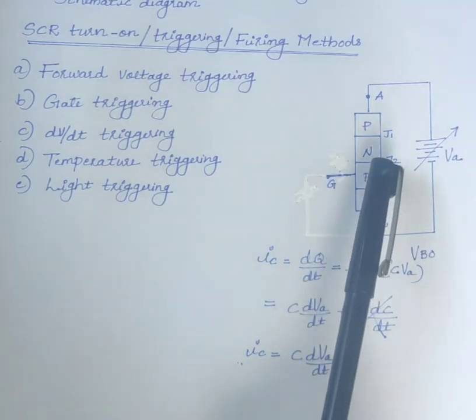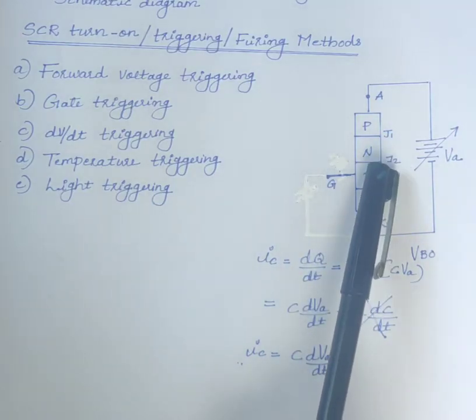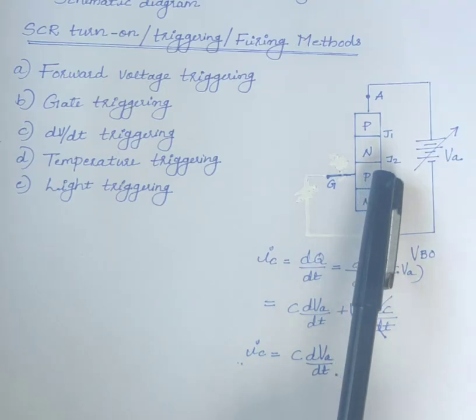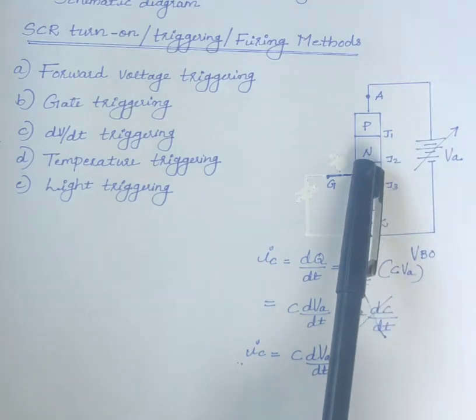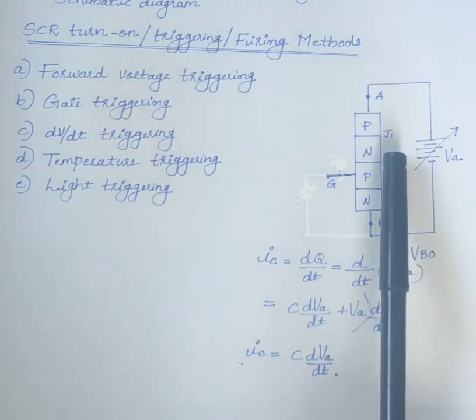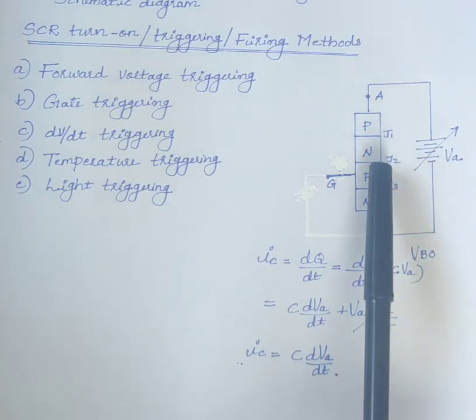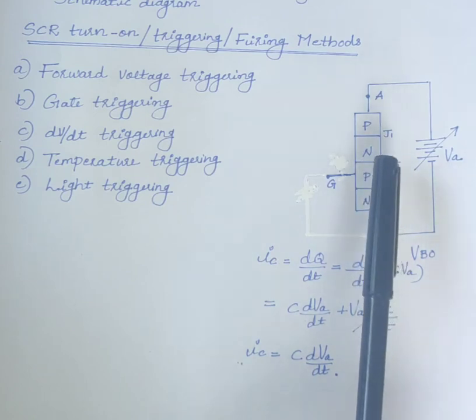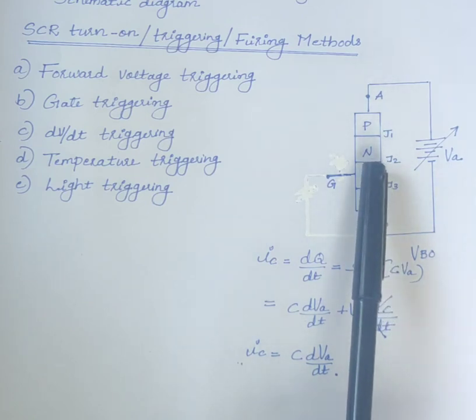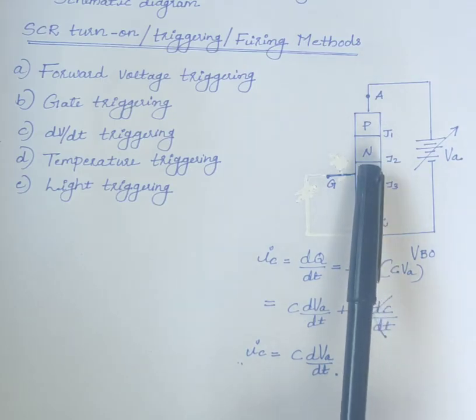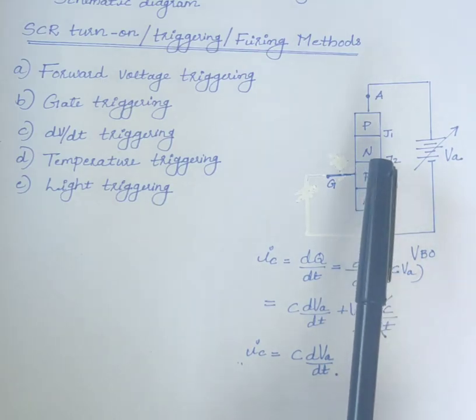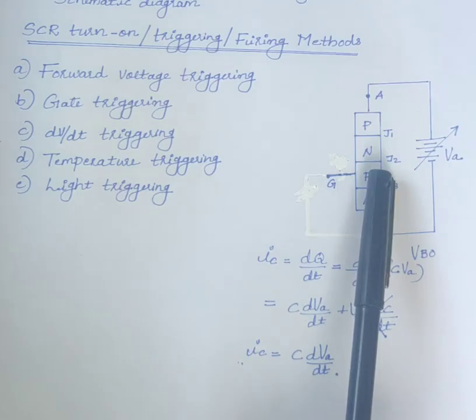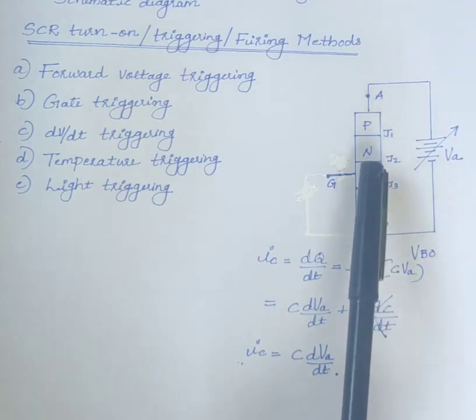With increase in temperature, the width of the depletion layer decreases. This further leads to more leakage current and therefore, more junction temperature. This is a cumulative process. At some high temperature, depletion layer vanishes and the device gets turned on. This is temperature triggering. This type of triggering is practically not employed.